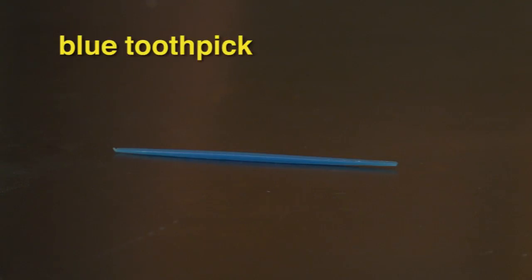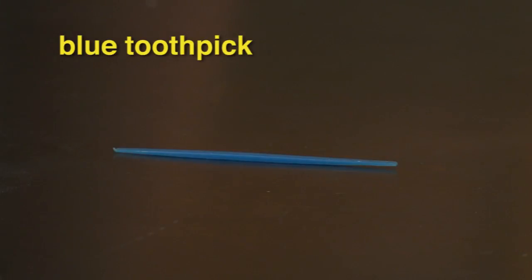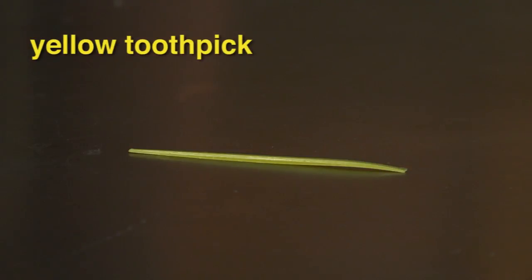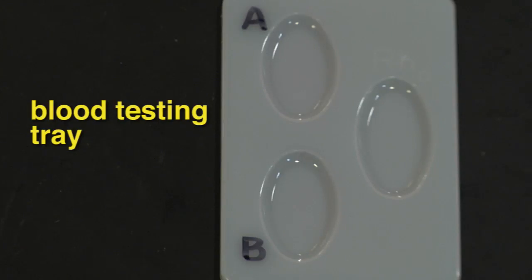In addition to the blood samples, you'll need a blue toothpick, a yellow toothpick, anti-serum A, anti-serum B, and a blood testing tray.